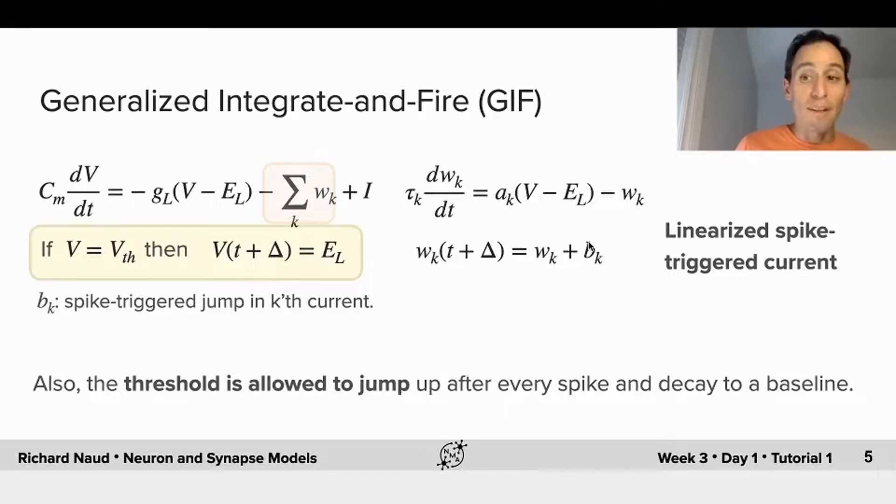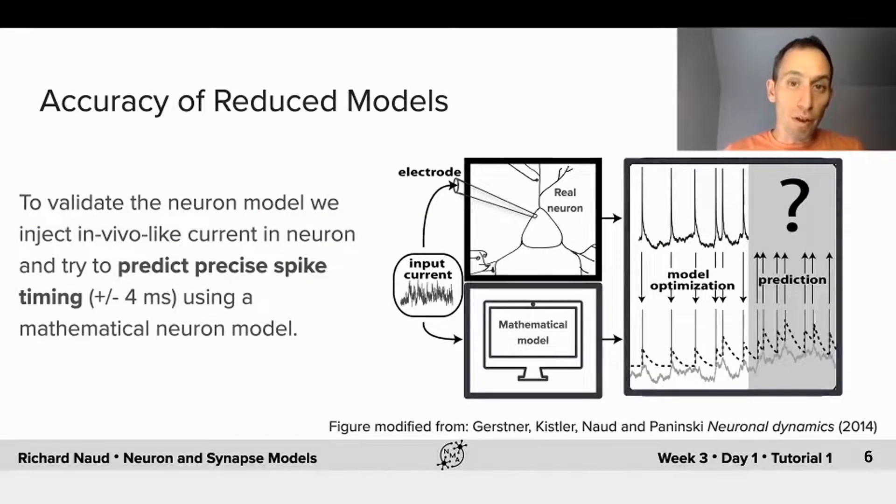This is what we call the linearized spike-triggered current. Another process that is also able to make spike frequency adaptation that I haven't talked about here is the process of the threshold itself being dynamic, such that whenever we spike, the threshold is moving up and can decay following linear dynamics. This is seen in real neurons, and real neurons, at least the excitatory neurons, are very frequently showing this sort of moving threshold. Now we'll test our model accuracy.